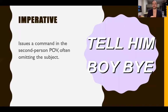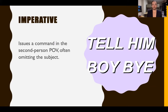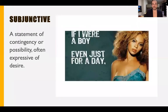Third: the imperative. This is the mood in which we issue a command — 'Tell them boy bye,' or 'Close the door.' It often uses the second person point of view and often omits the subject. So I don't say 'Zach, calm down' — I just say 'calm down.' I can use the subject but I don't have to.